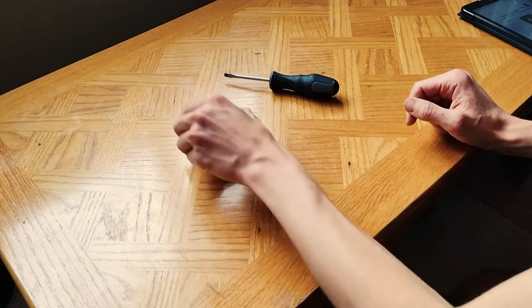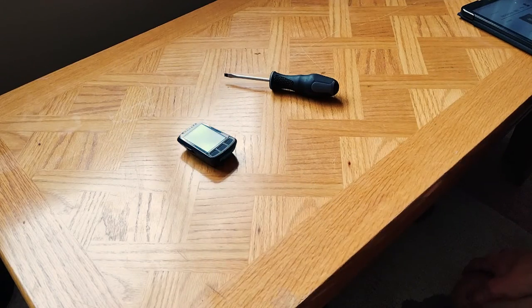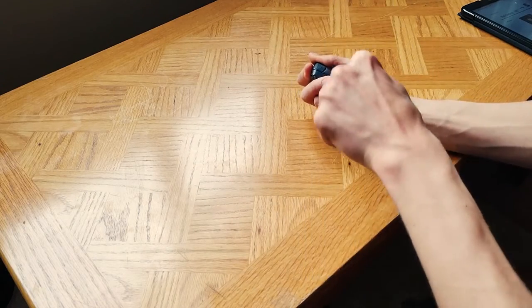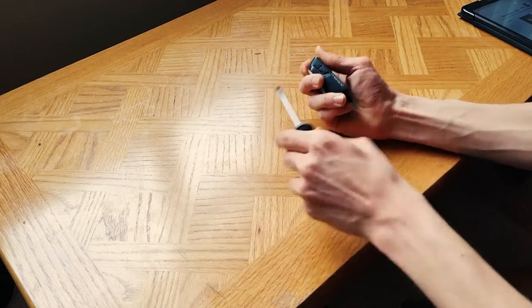So without further ado, let's get started. Step one: remove the buttons on the side. I mean, I've only got tiny little roadie arms, so there's no wonder I need tools in order to do that.